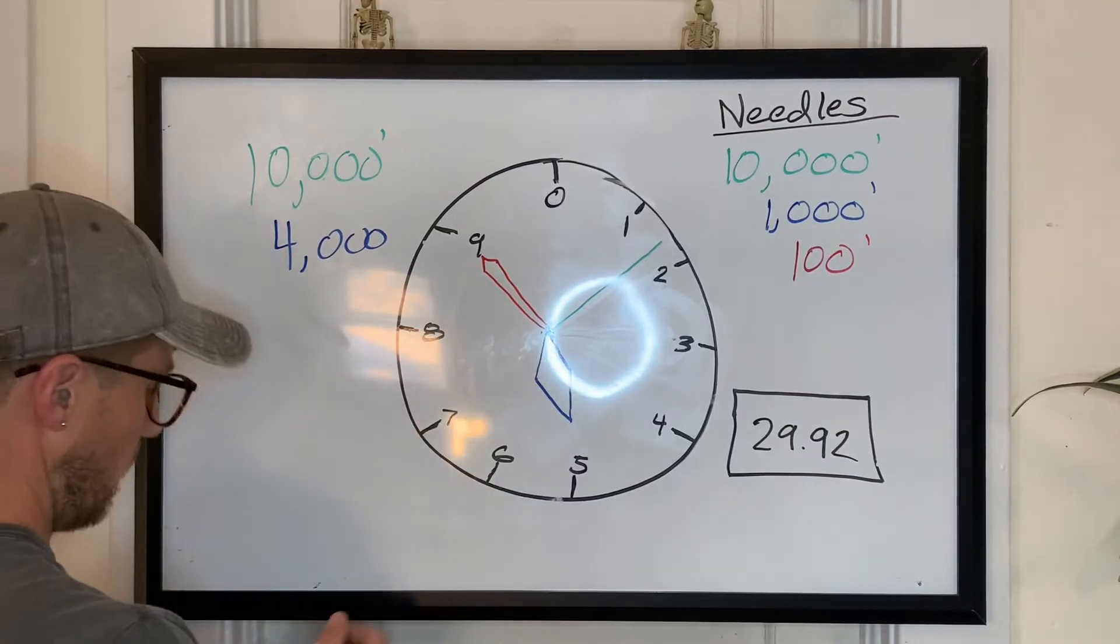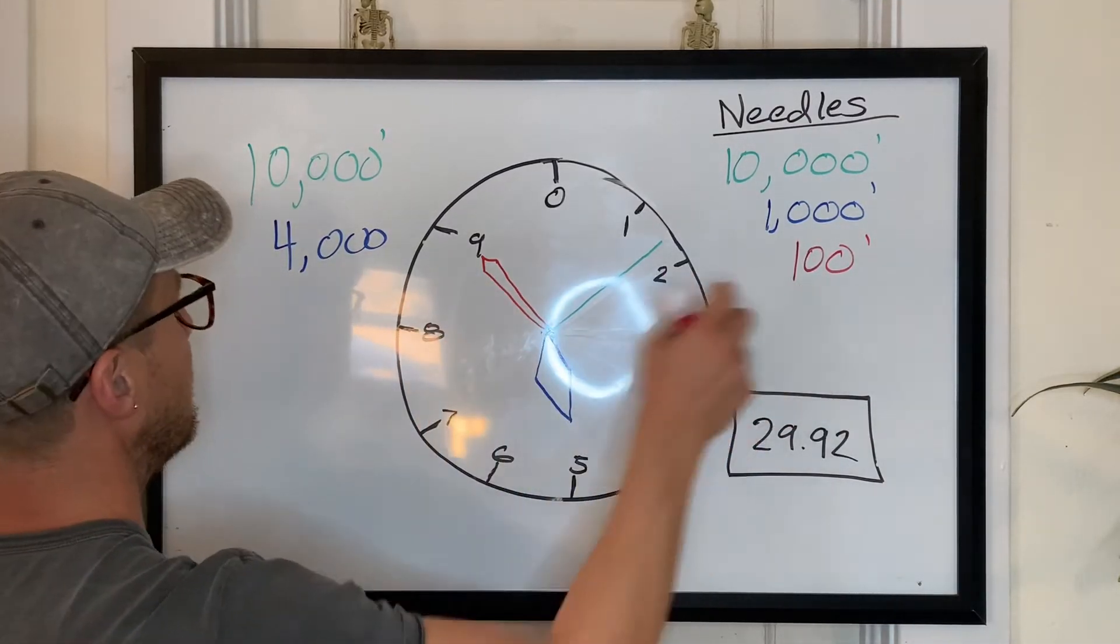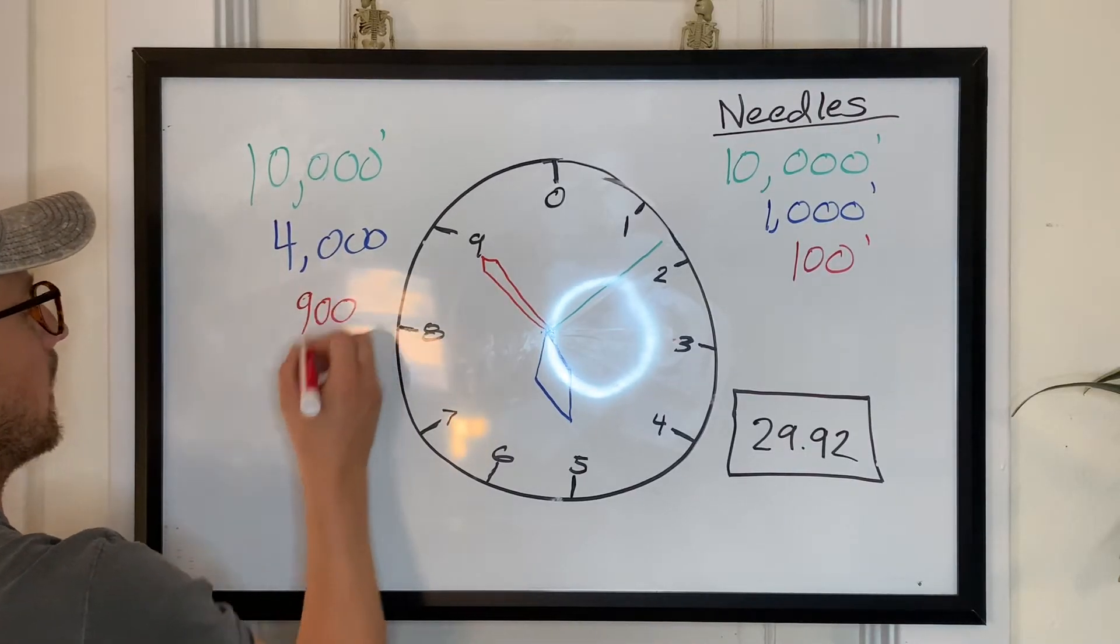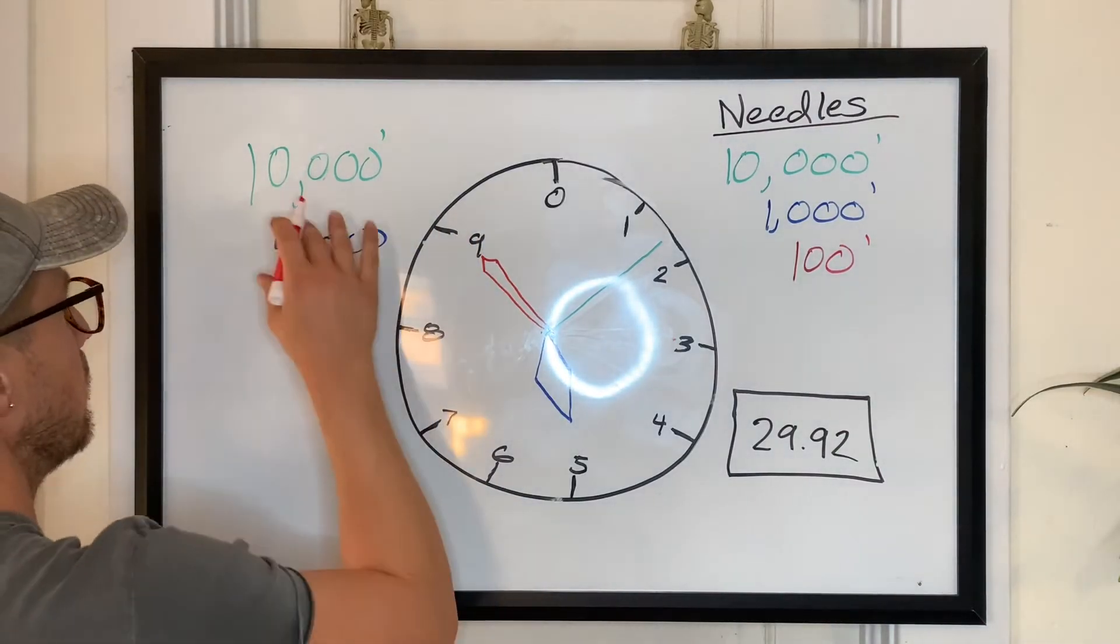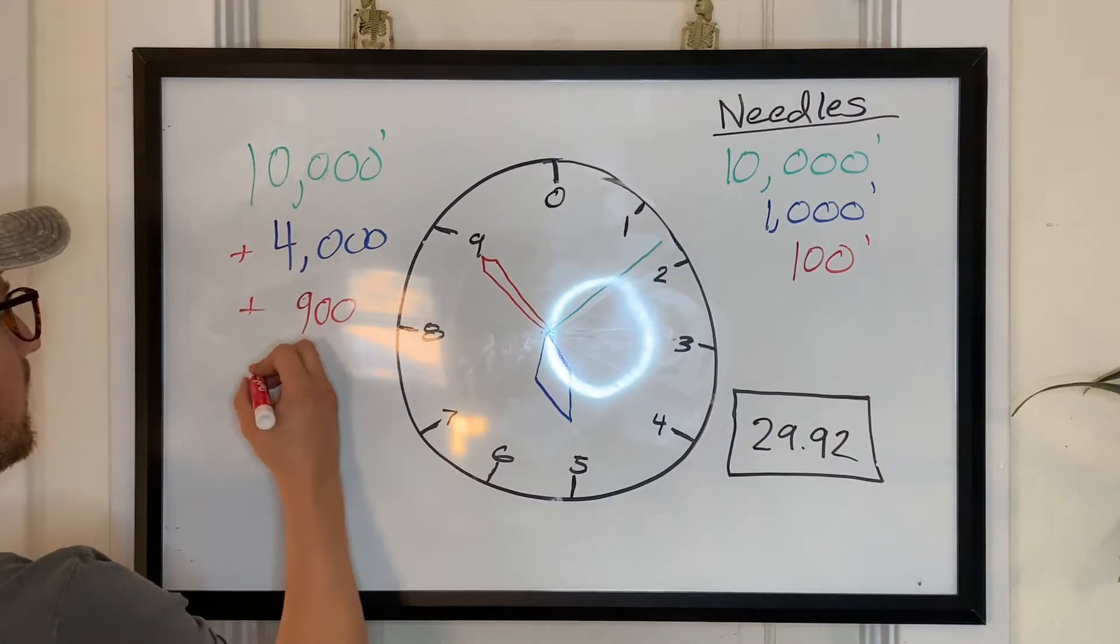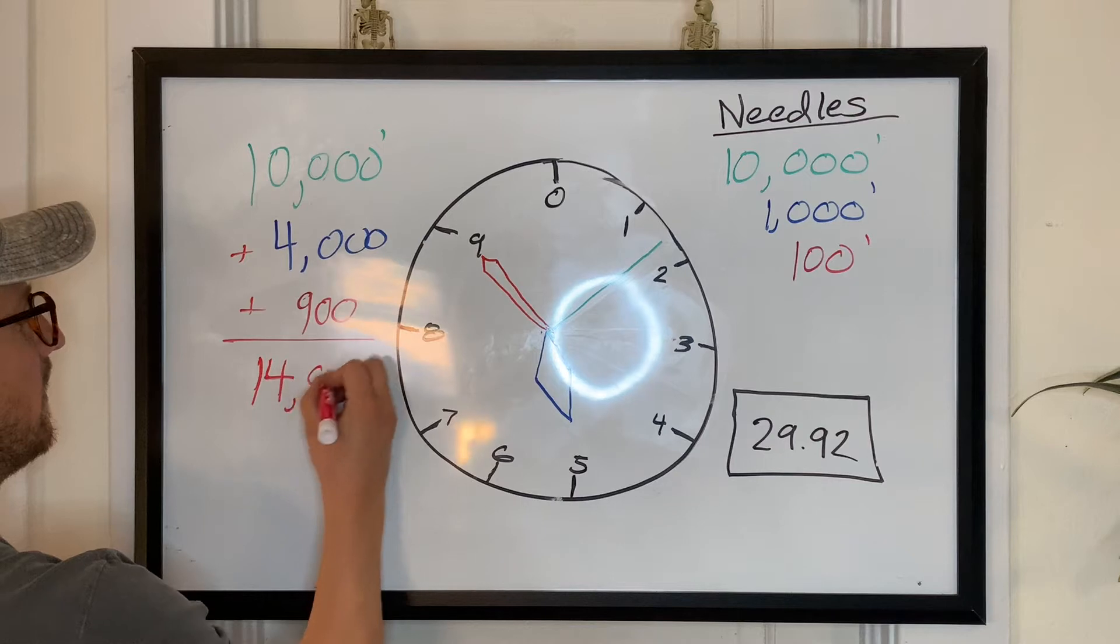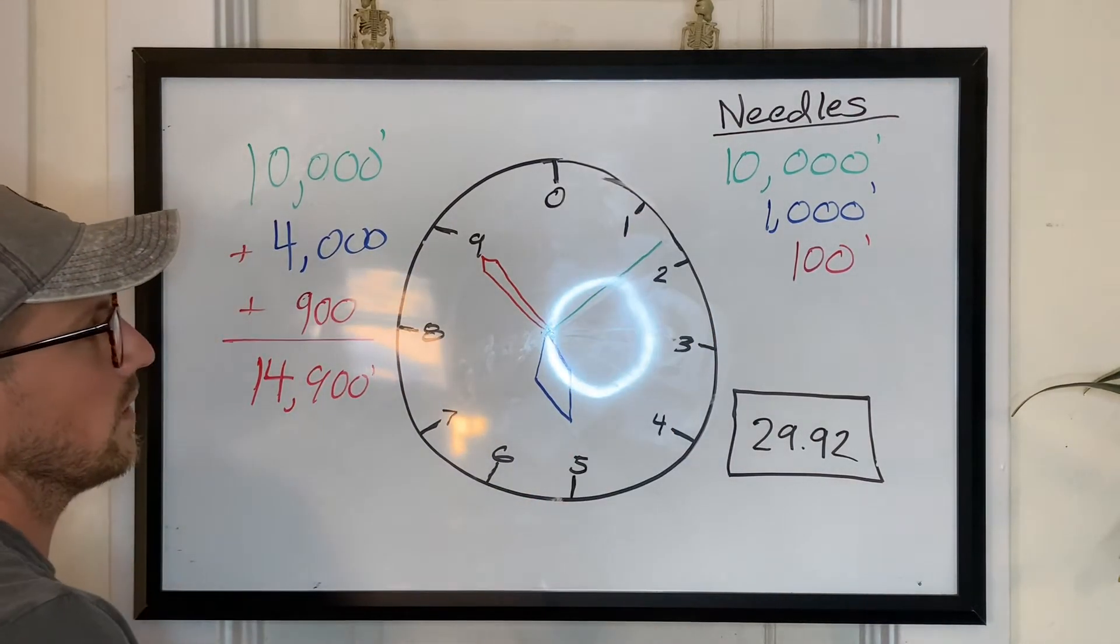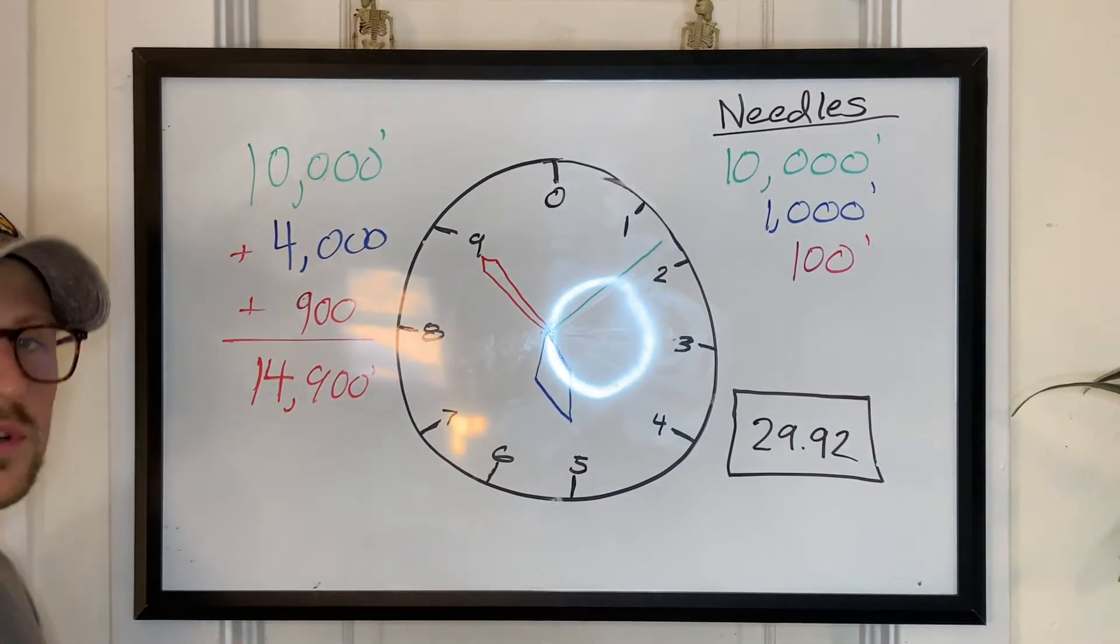Now finally, we go down to the 100 one. This one's pointing right at the 9, so that's 900. So we're going to write 900. And now basically what we do is we just add these up. So 10,000 plus 4,000 plus 900, that's going to give us 14,900 feet. And again, this green one told us that it was about 15,000, 16,000 feet. So that's pretty close, 14,900.